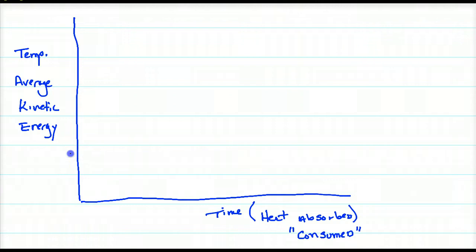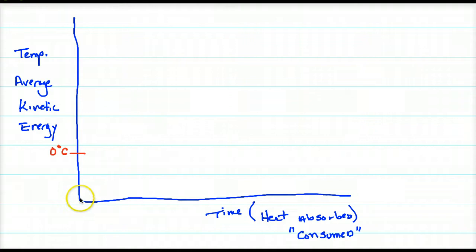We're going to start with ice below its freezing point, which is 0°C, 273 K, or 32°F. Ice below its freezing point is very possible — for instance, ice at negative 20°C. There's no limit to how cold it can get until you reach 0 Kelvin. So I take ice and begin heating it, and the average kinetic energy goes up. It goes up until it reaches a special temperature — its melting point temperature.